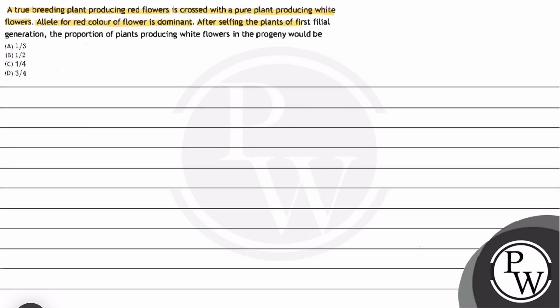After selfing the plants of first filial generation, the proportion of plants producing white flowers in the progeny would be... There are 4 options: 1 by 3, 1 by 2, 1 by 4, and 3 by 4.